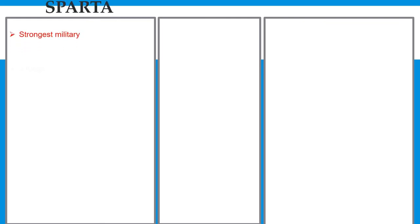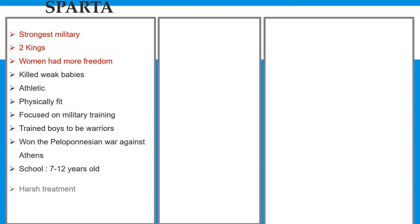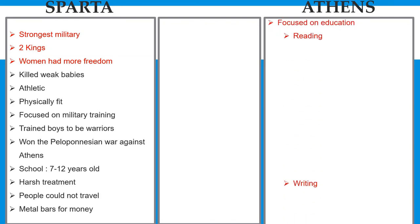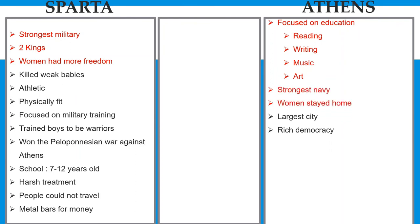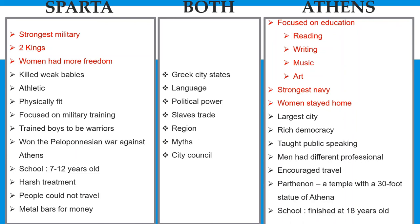Comparing Athens and Sparta: Sparta had the strongest military, two kings, women had more freedom, killed weak babies, was athletic and physically fit, focused on military training, trained boys to be warriors, won the Peloponnesian War, schooled boys from age 7 to 12 with harsh treatment, people could not travel, and used metal bars for money. Athens focused on education — reading, writing, music, and art — had the strongest navy, women stayed home, was the largest city, a rich democracy, taught public speaking, men had different professions, encouraged travel, and had the Parthenon — a temple with a 30-foot statue of Athena — with schooling finishing at age 18. Both shared: Greek city-states, language, political power, slave trade, religion, myths, and city council.